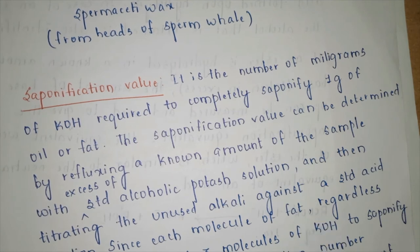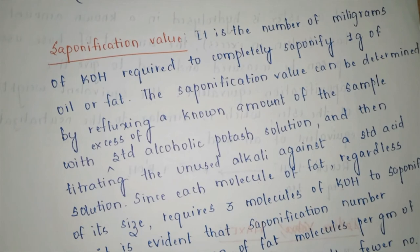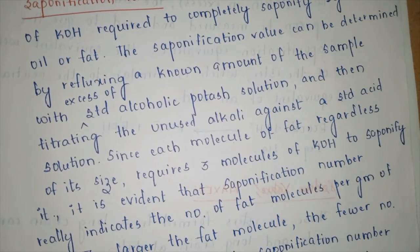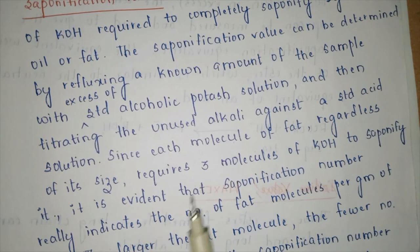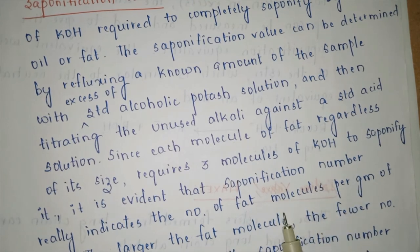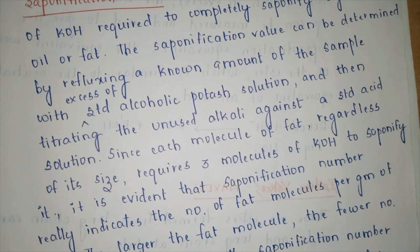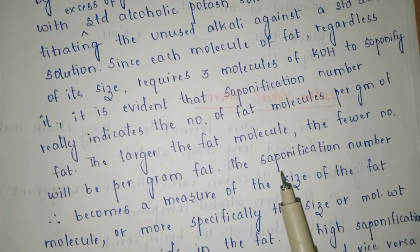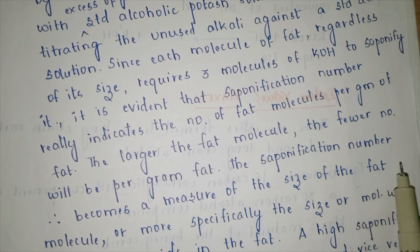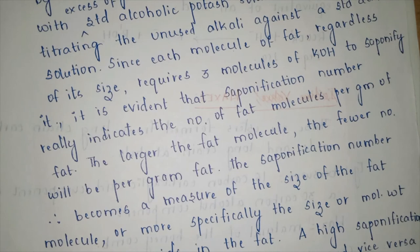Each molecule of fat, regardless of its size, requires 3 molecules of KOH to saponify it. The saponification number therefore indicates the number of fat molecules per gram of fat. The larger the fat molecule, the fewer per gram; so saponification number is a measure of the molecular weight of the fatty acids. Higher saponification number means lower molecular weight fatty acids.